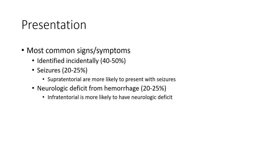The most common signs and symptoms: headache identified in 20-40% to 50%, seizure 20-25% — supratentorial lesions are more likely to present with seizure. Neurologic deficit from hemorrhage 20-25% — infratentorial lesions are more likely to have neurological deficit.